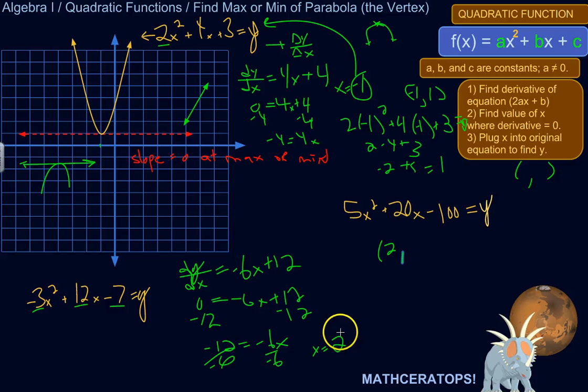So I plug that back into my original equation. So I've got negative 3 times 2 squared plus 12 times 2 minus 7. So 2 squared is 4 times negative 3 is negative 12. 12 times 2 is 24. Then we've got negative 7. So negative 12 plus 24 is 12. And then minus 7 is equal to 5.